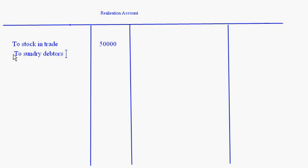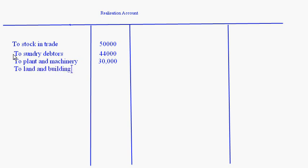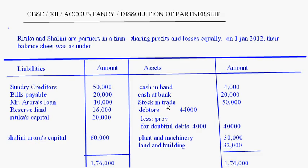On the debit side: sundry debtors — that is rupees 44,000. The provision will not come here; provision will come on the credit side as it is a liability. Plant and machinery is rupees 30,000, and land and building is rupees 32,000. To summarize the debit side figures: stock in trade rupees 50,000, debtors rupees 44,000, plant and machinery rupees 30,000, land and building rupees 32,000.